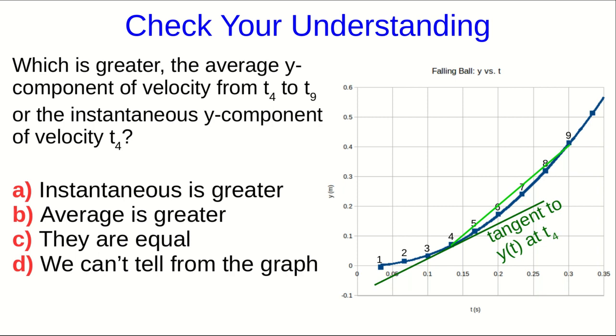So have a look at this graph that I've just been talking about, and decide which is larger, the average y component of the velocity from t4 to t9, or the instantaneous y component of velocity at t4.